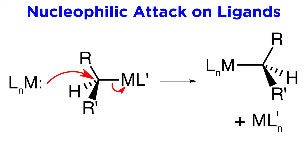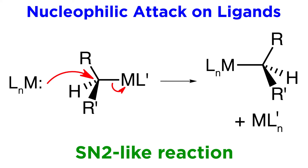Finally, metal-ligand sigma bonds can be attacked, such as here where a metal from some complex attacks this carbon atom, thus kicking off this other complex entirely, like an organometallic version of the SN2 reaction.